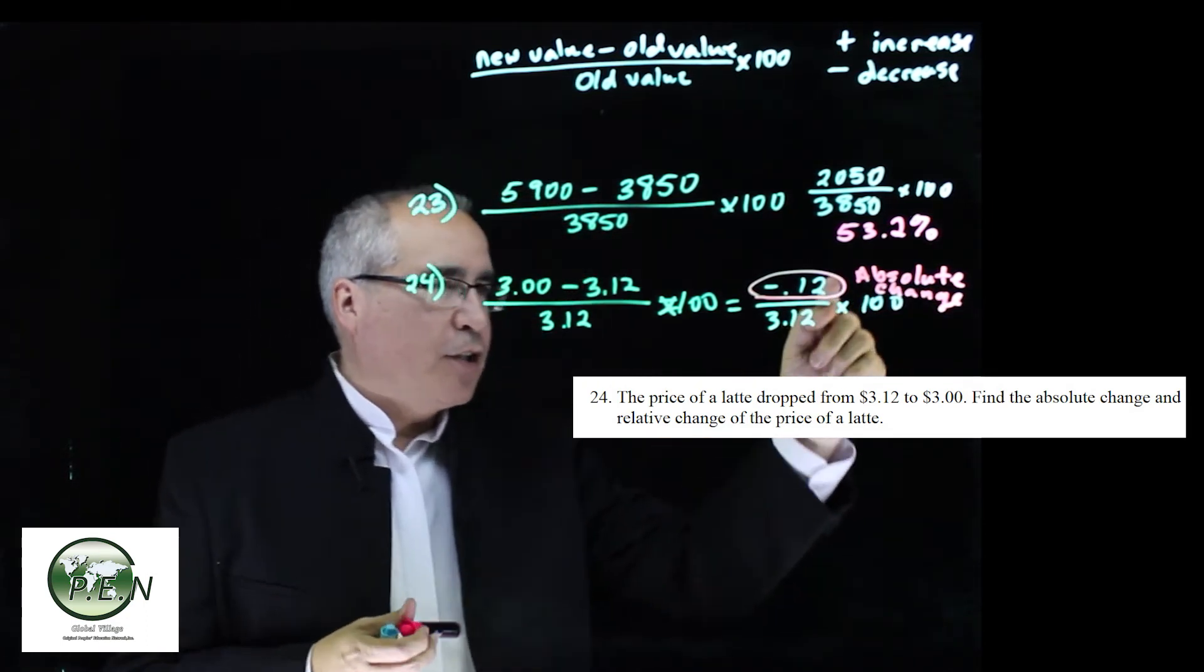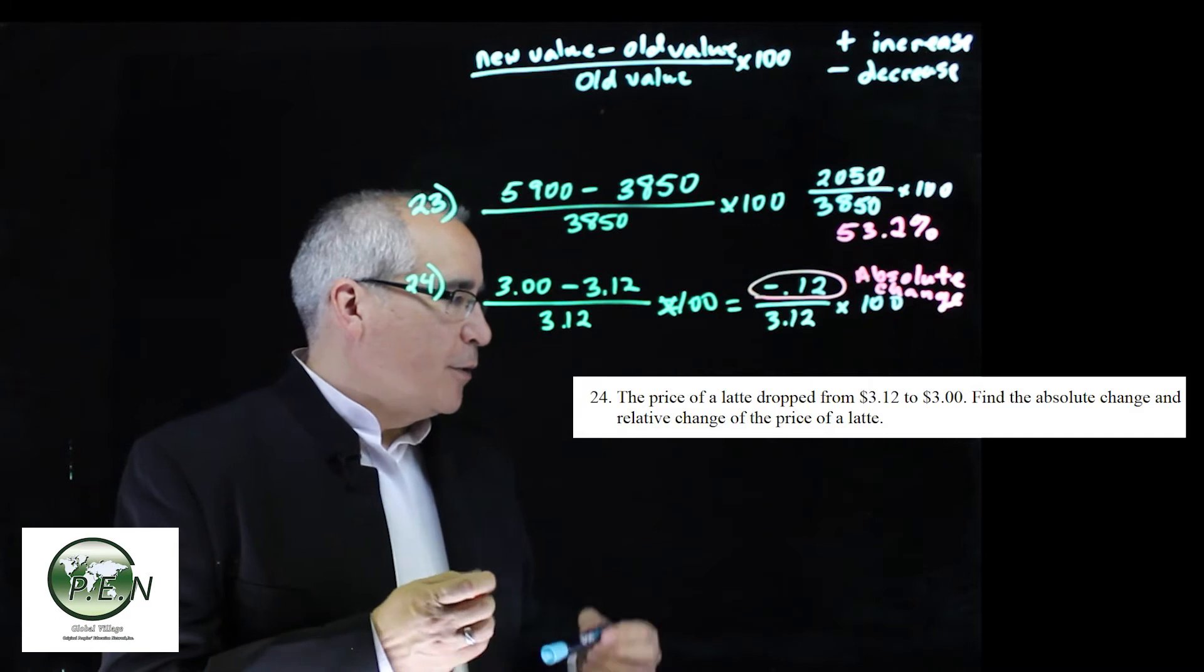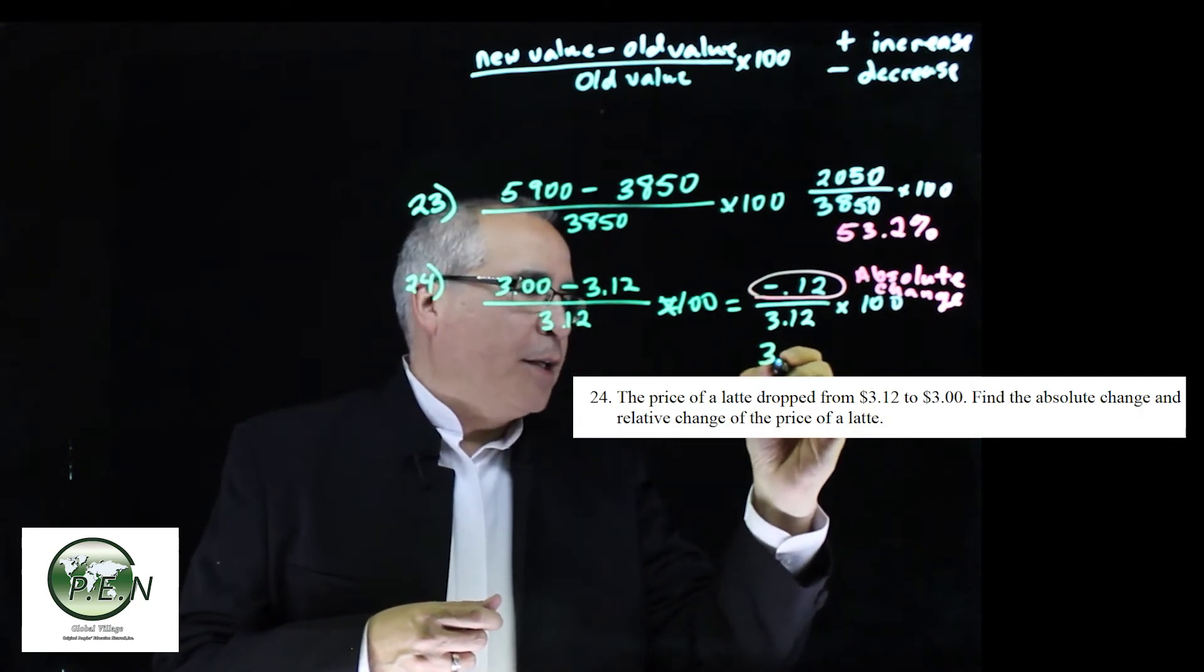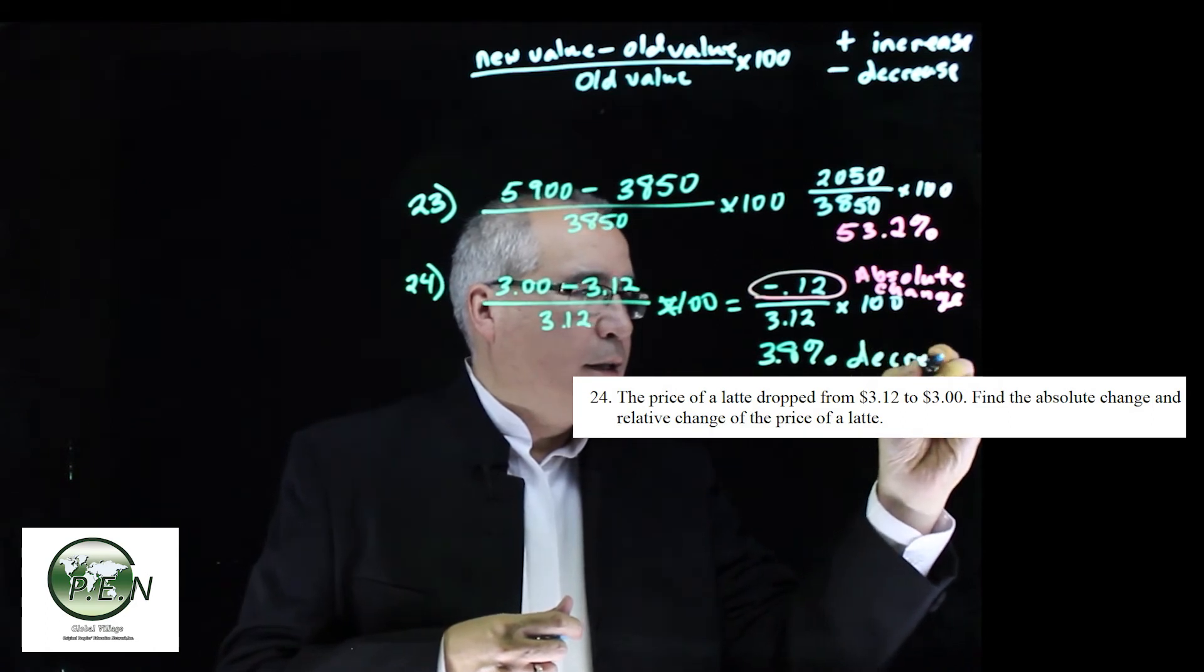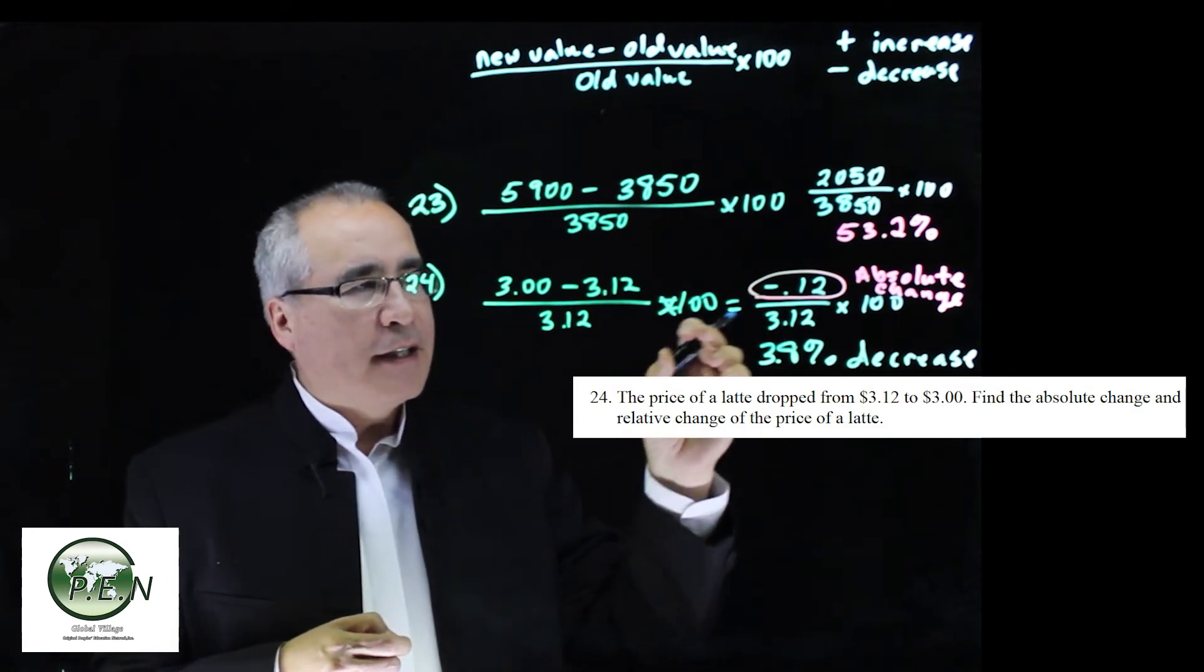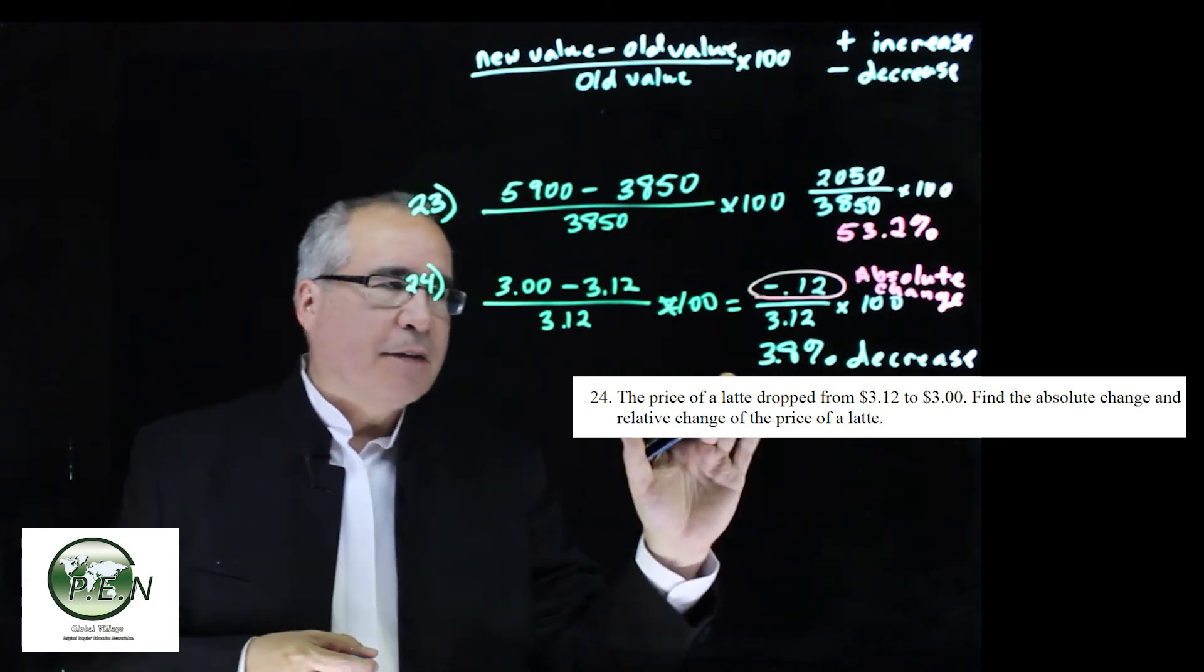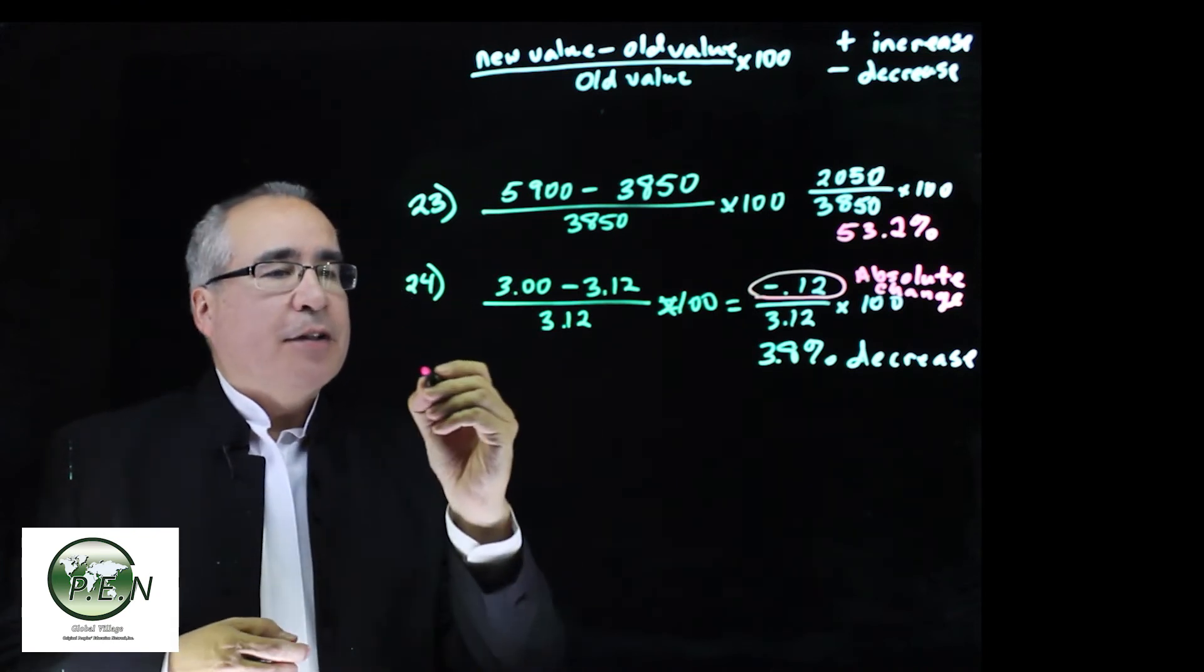To get the percent change, we continue with the calculation. Negative 0.12 divided by 3.12 and then multiply by 100. What we get is we get a negative rate, but what we do is we list it as a 3.8% decrease. We could put a negative here, but if we put a negative, we usually won't say a decrease, because then that's a double negative. So a negative decrease, is that an increase? We just don't want to confuse ourselves. If it's a decrease, we just say decrease. If we don't want to say the word decrease, then we would put the negative 3.8.